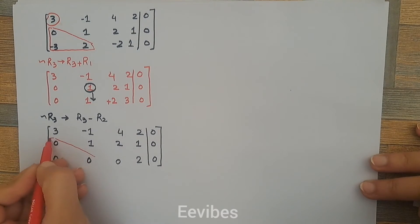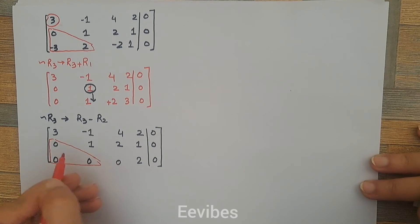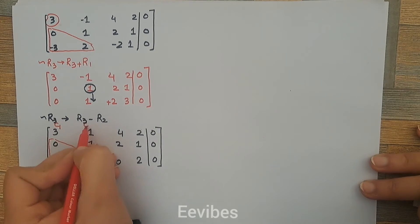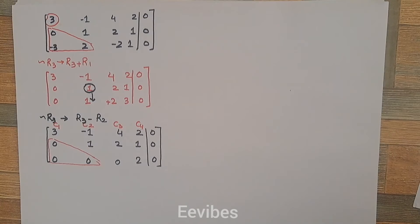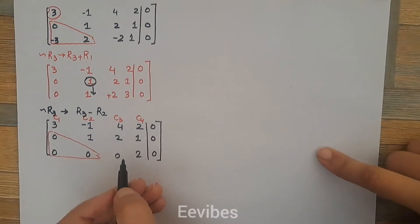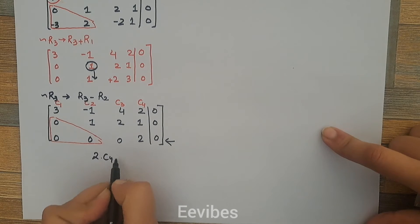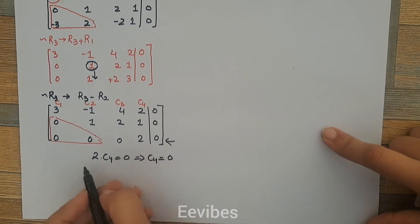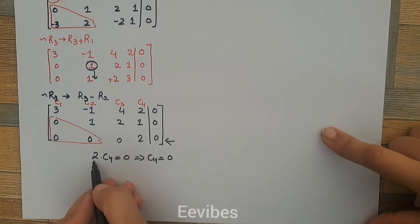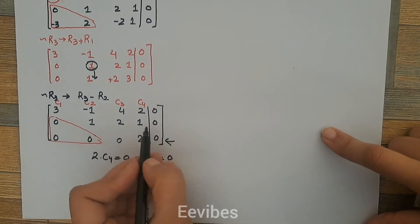The next step is back substitution. These were the coefficients of c1, c2, c3, and c4. Starting from the bottom equation: 2*c4 = 0, which implies c4 = 0, since 2 is non-zero it must be multiplied by 0 to satisfy the equation.